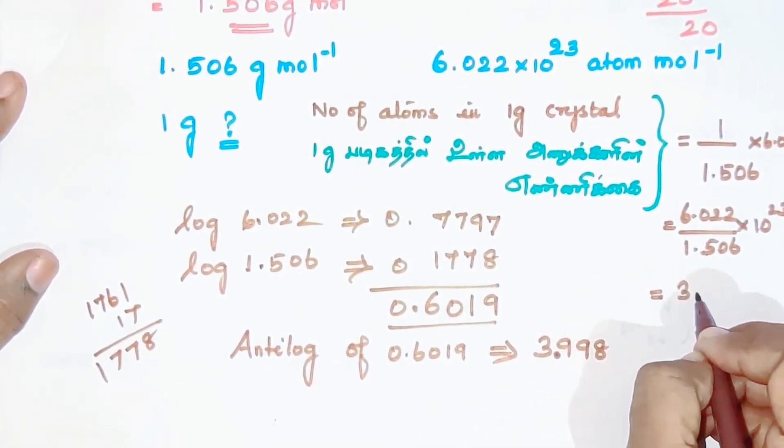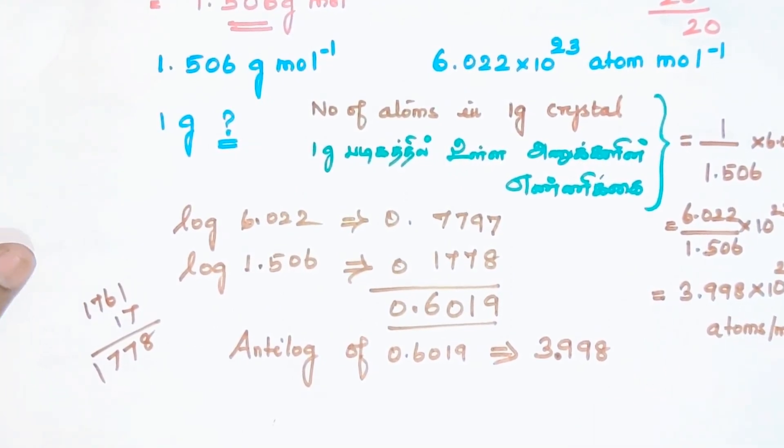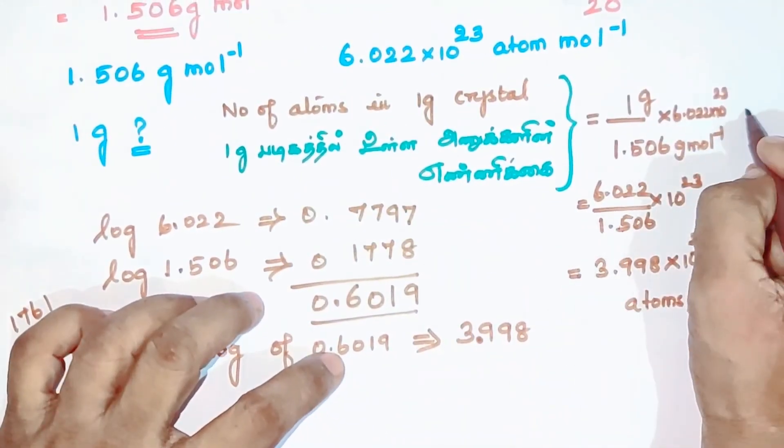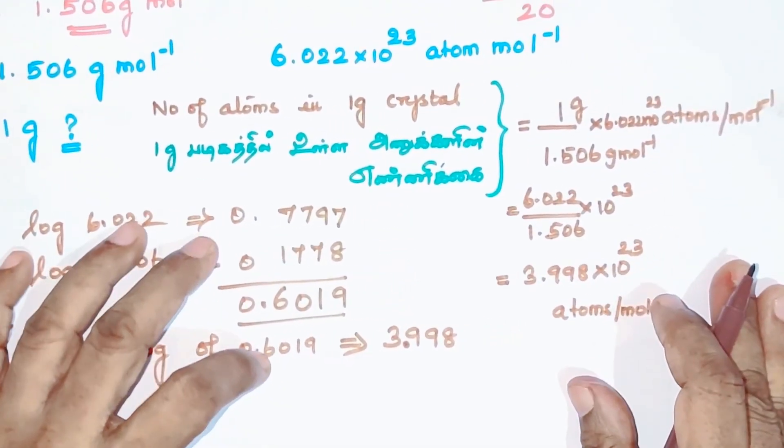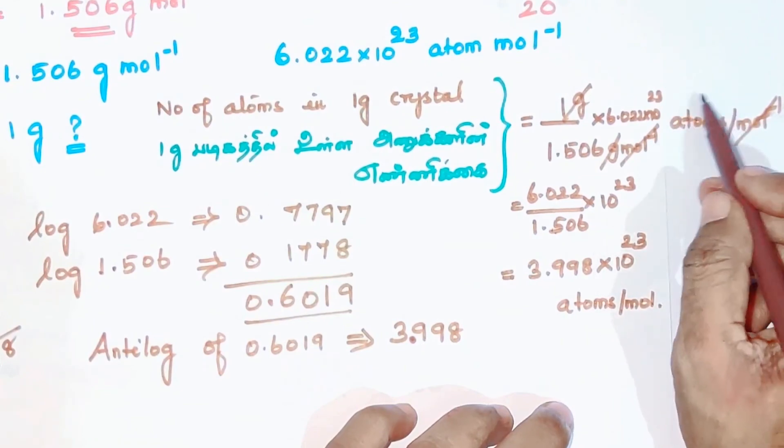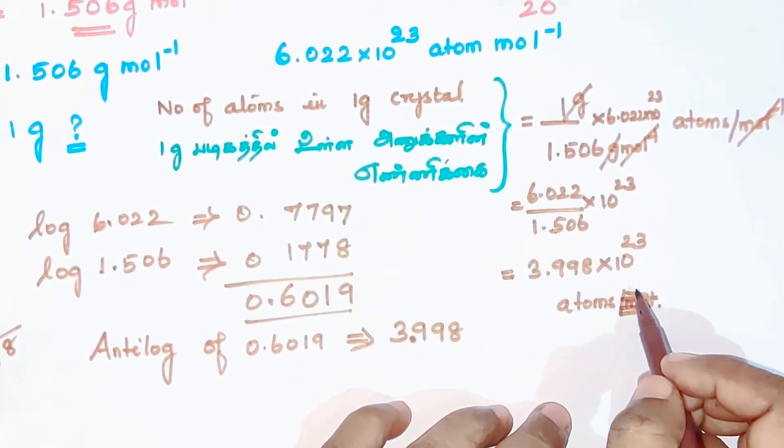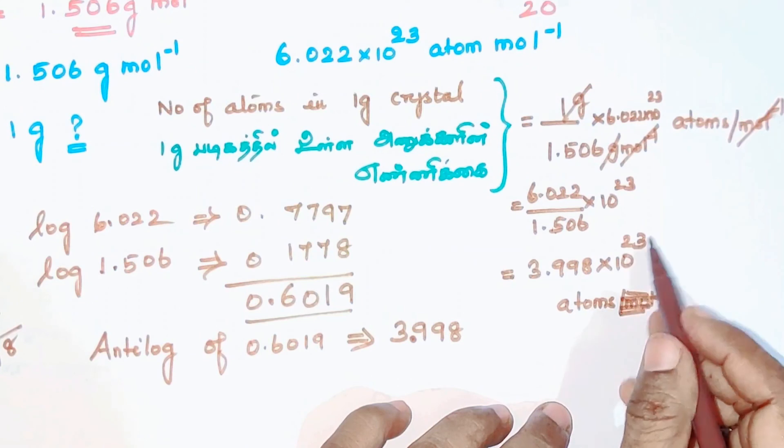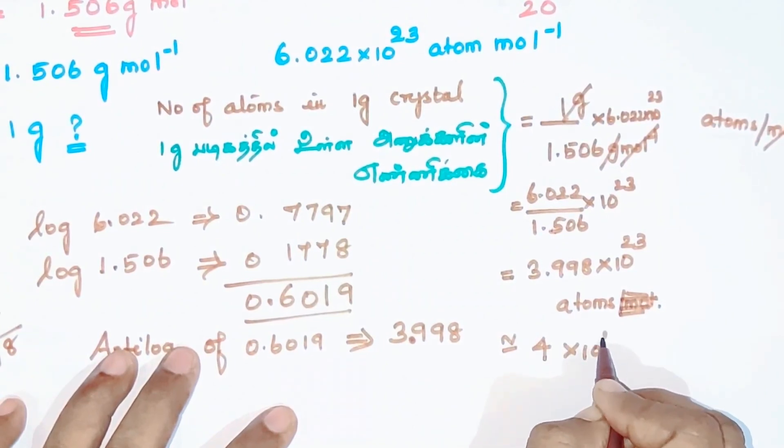With 10 power 23 already included, we get atoms per mole. For 1 gram of crystal, the number is 3.998, which is approximately equal to 4 when rounded off. So the answer is 4 into 10 power 23 atoms.